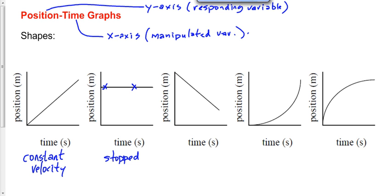What about the third graph? Reason through it. For the first graph, Bruce said the position is increasing at a constant rate. For this third one, the position is decreasing at a constant rate. How do we summarize that? Constant negative velocity.